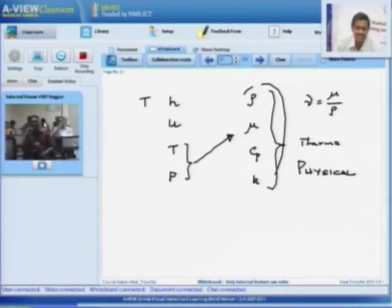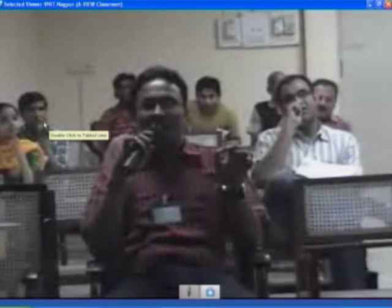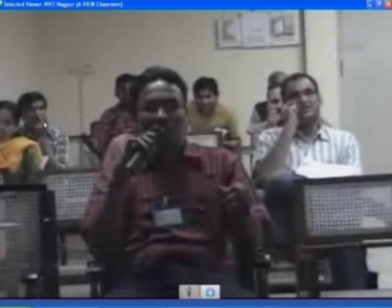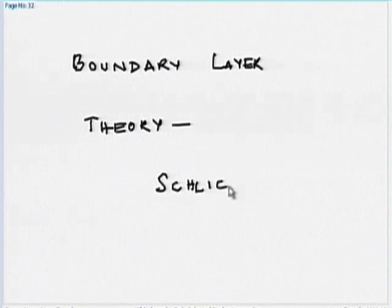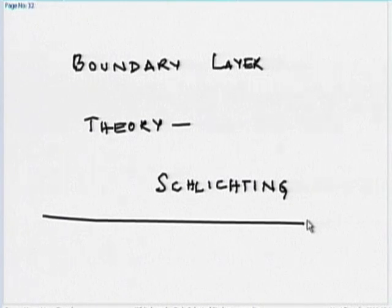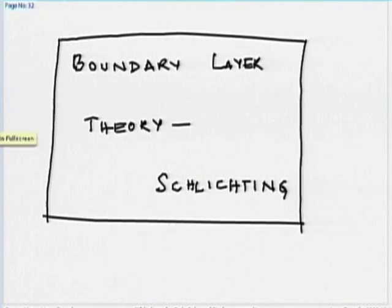Q&A continued: In which book is the information about maintaining laminar flow up to Re = 50,000? The reference is 'Boundary Layer Theory' by Schlichting (S-C-H-L-I-C-H-T-I-N-G), published by Springer Verlag. If you Google it, you will find the appropriate edition. This information is available in whichever edition is currently accessible.